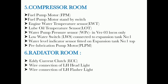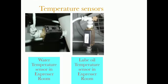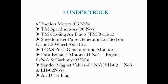Radiator Room: Eddy Current Clutch ECC. Wire connection of LH headlight and LH flasher light. Under Truck: Traction Motors — total 6. TM Speed Sensors — 6. TM Cooling Air Ducts and TM Bellows. Speedometer Pulse Generator located on L1 or L2 wheel axle box. TCOS Pulse Generator and Monitor. Dust Exhaust Motor — 4 total: Engine 2, Car Body 2. Sander Magnet Valves R4, SH2, LH2. Air Dryer Plug.